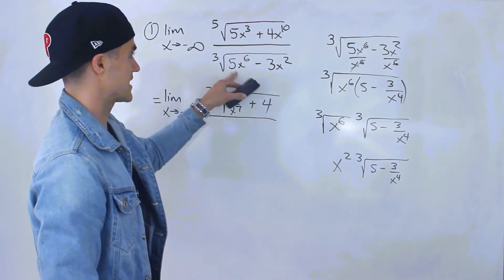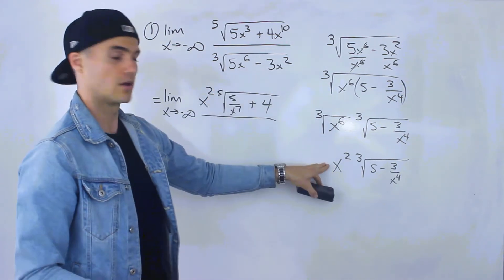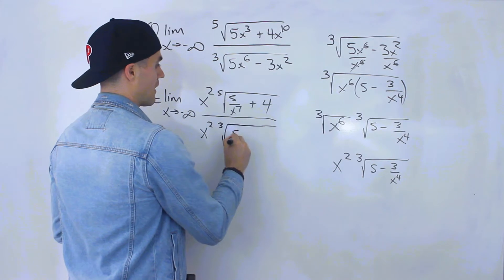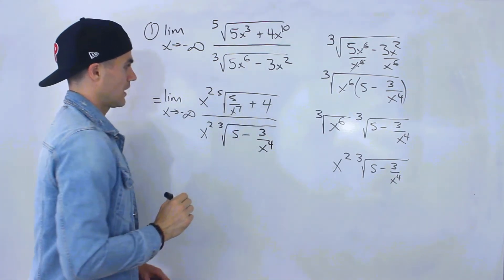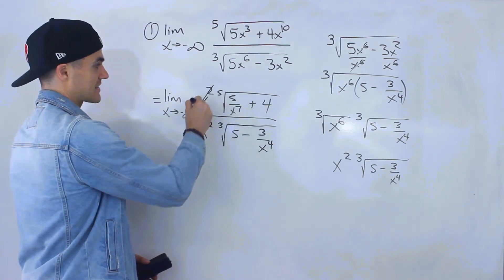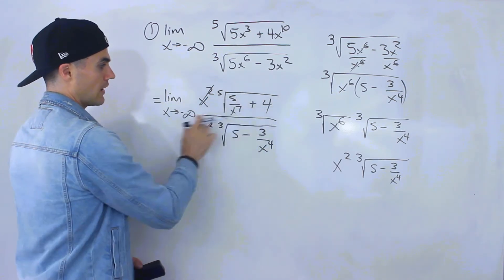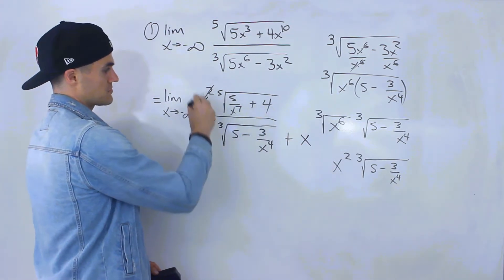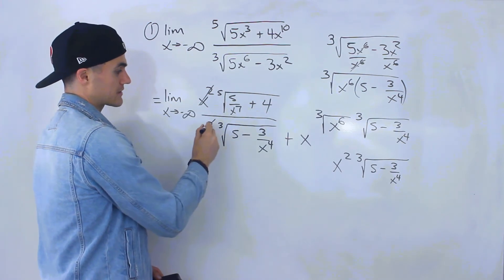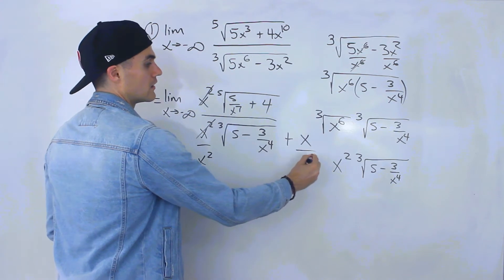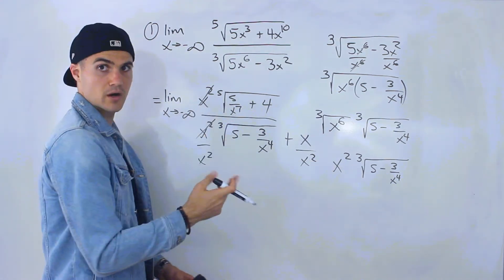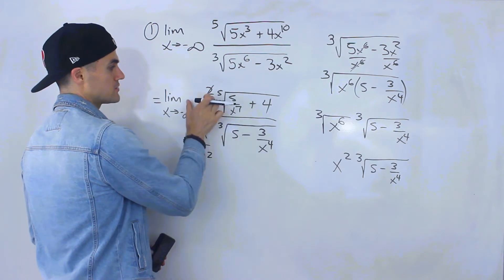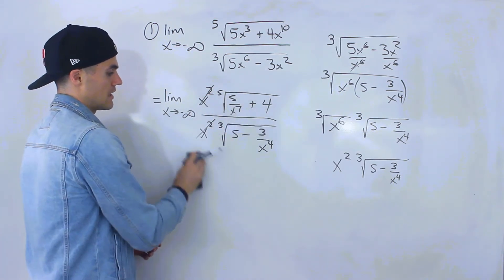So the denominator expression converts to x² times the third root of (5 − 3/x⁴). Notice what's unique about this limit: the x² terms cancel out because we're multiplying expressions — there's no added x term that would prevent cancellation. If there were an extra x, we'd have to divide everything by x² instead. But since we just have two expressions multiplied, the x² terms cancel out.